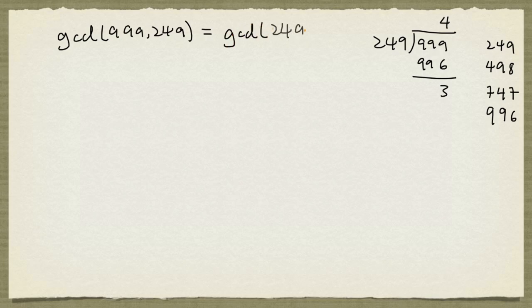So the GCD is equal to the GCD of 249 and 3. And now we can see that 3 divides 249 since 249 is 83 times 3. So the GCD of these two numbers is 3.